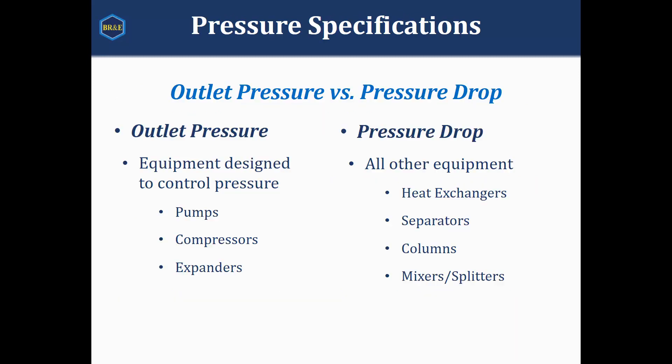As an example, we can talk about setting an outlet pressure versus setting a pressure drop. If a piece of equipment is designed to control the pressure — such as with pumps, compressors, or expanders — in those cases we're going to want to just specify the outlet pressure itself. For example, if you have a compressor aiming for 700 PSIG at the discharge, we would just go into that outlet stream and type in that 700 PSI pressure directly in that stream.